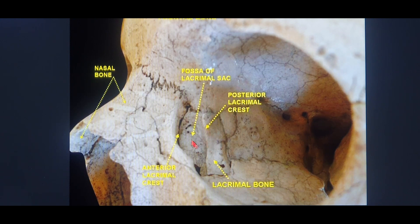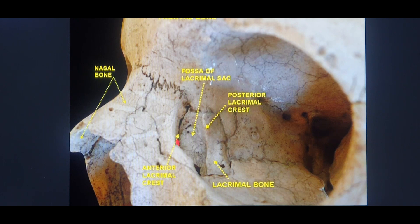That forms the posterior lacrimal crest in the inferior posterior part. This is the basic anatomy in which the anterior lacrimal crest is taken as the margin. From this anterior lacrimal crest, if we keep going posteriorly, we get the anterior and posterior ethmoidal foramen and canal, and eventually the optic canal as well. The anterior lacrimal crest is the reference point.